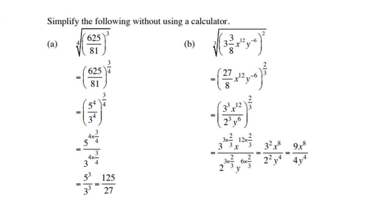Then 27 is 3 to the power 3, and of course 8 is 2 to the power of 3. Then y to the power minus 6 must go down, become y to the power positive 6. Then we multiply two-thirds with all the exponents: with a 3, with a 12, with the other 3 at the bottom, with a 6. And this gives you 3 squared, which is 9, x to the power 8, and 2 squared, which is 4, y to the power of 4.